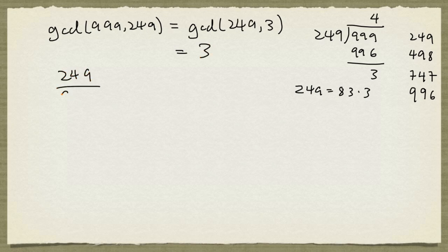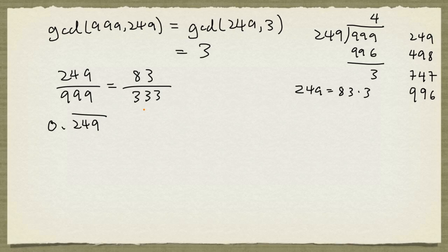So 249 divided by 999 is the same as 83 divided by 333. So what we have shown is 0.249 repeated is this fraction.